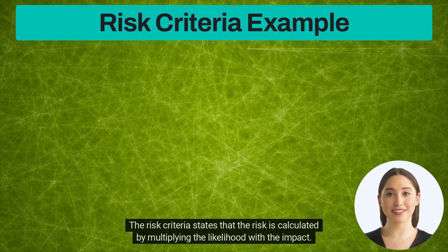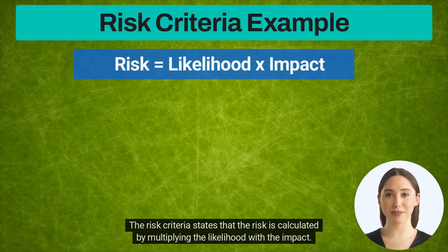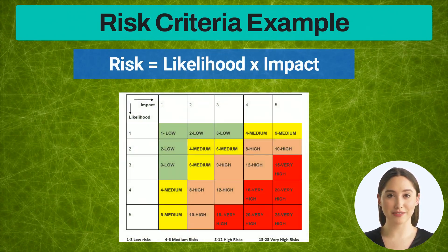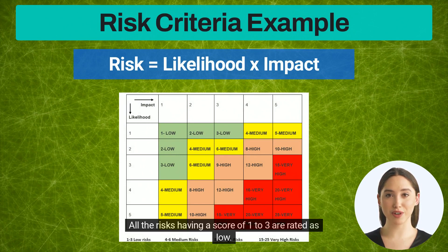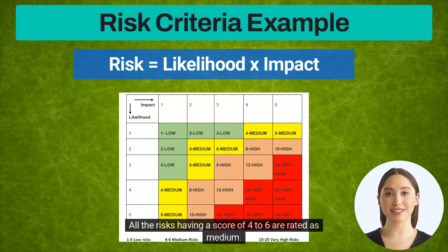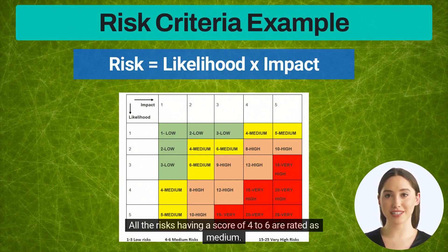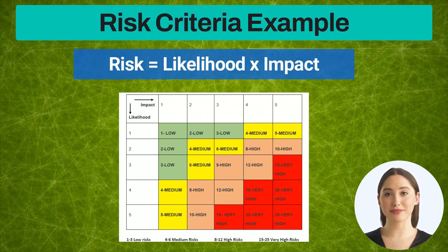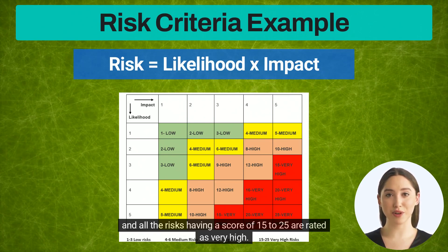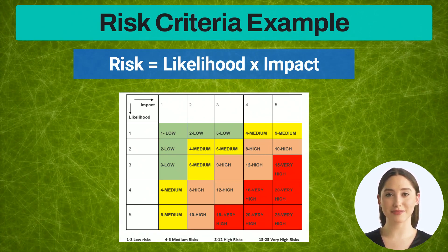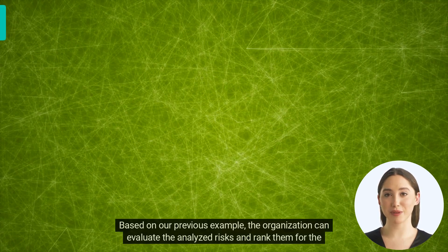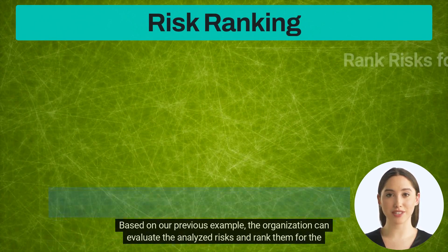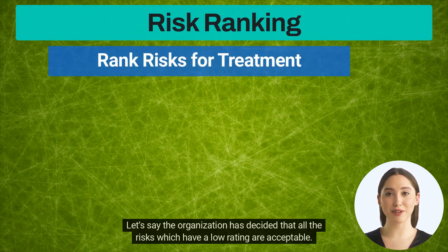The risk criteria states that the risk is calculated by multiplying the likelihood with the impact. This five-by-five risk matrix is used to assign ratings to risk. All the risks having a score of one to three are rated as low. All the risks having a score of four to six are rated as medium. All the risks having a score of eight to twelve are rated as high. And all the risks having a score of fifteen to twenty-five are rated as very high. Based on our previous example, the organization can evaluate the analyzed risks and rank them for the risk treatment process.